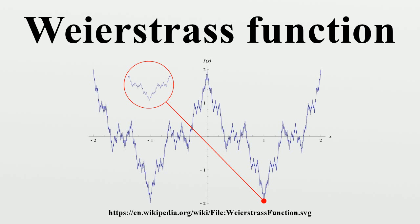The proof that this function is continuous everywhere is not difficult, since the terms of the infinite series which defines it are bounded by plus or minus b^n, and this has a finite sum for 0 < a < 1. Convergence of the sum of the terms is uniform by the Weierstrass M-test with M_n = a^n. Since each partial sum is continuous and the uniform limit of continuous functions is continuous, it follows that f is continuous.